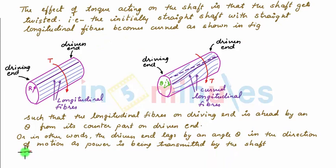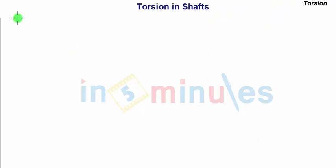And this happens because shaft is a deformable body. Had shaft been a rigid body, even after application of torque, the straight longitudinal fiber would have been straight, as shown by this dashed line.